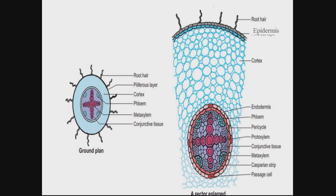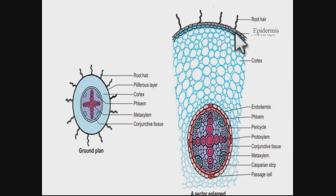Remember that here there is no cuticle deposition shown because this is the transverse section of young dicot root. In the young condition there is no cuticle, but in a later mature stage we do have cuticle deposition in the root as well.